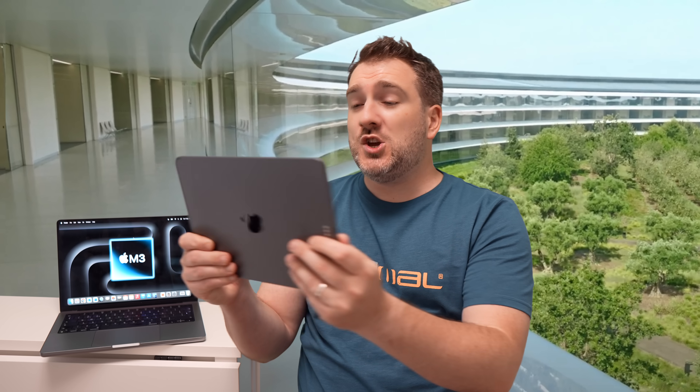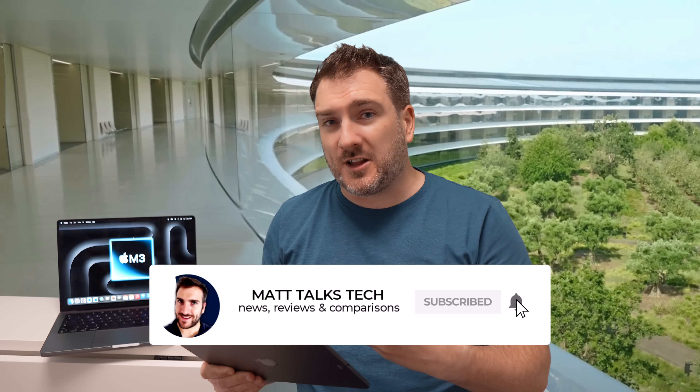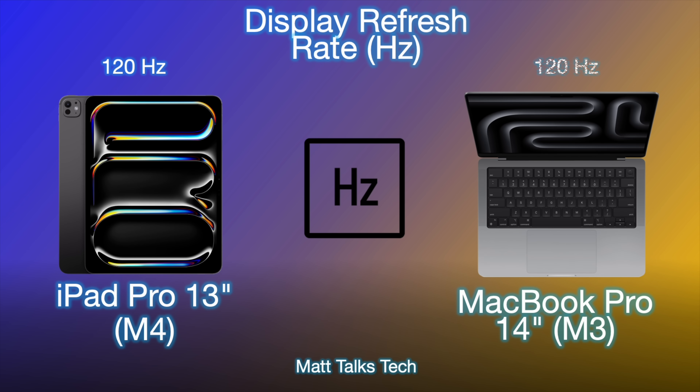Don't take those pixel-per-inch figures too seriously — the iPad Pro is held closer to your face compared to a MacBook Pro, so in practice there isn't much difference for your eyes. However, that OLED display on the iPad Pro is going to appear far crisper. Both models feature ProMotion, going up to 120Hz and down to 1Hz, so they're neck and neck there.